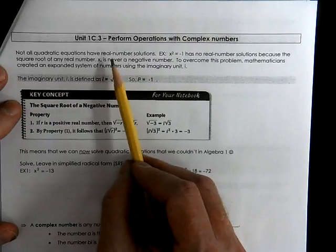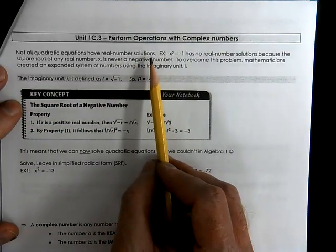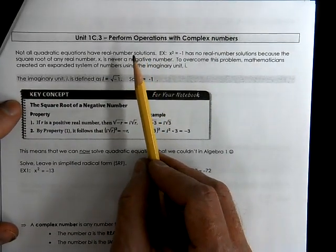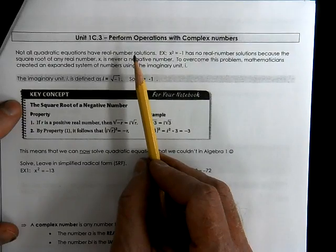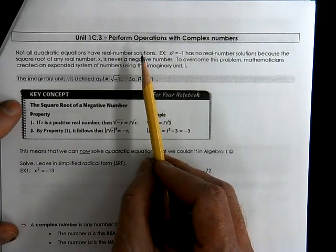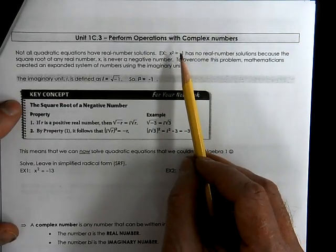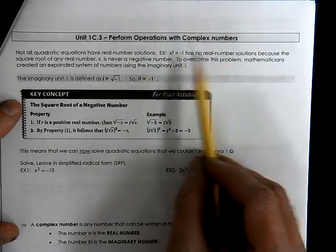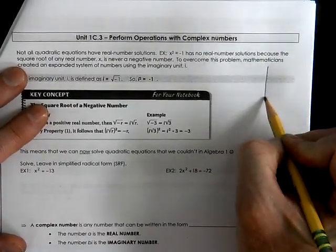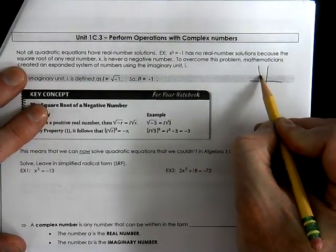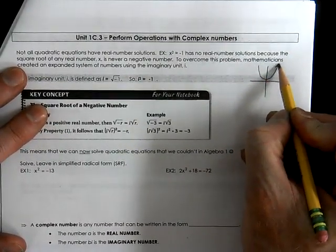Not all quadratic equations have real solutions. That means when we solve for x, you might have an answer that's not actually on the number line. For example, x squared equals negative 1 has no real solutions.